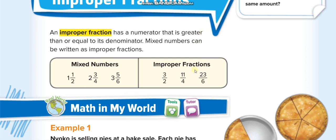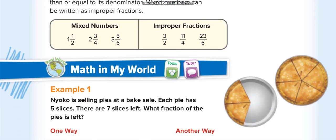In this lesson we will convert from mixed numbers to improper fractions and vice versa. To convert a mixed number to an improper fraction, multiply the whole number by the denominator, then add the numerator. For example: 1 and 1/2 → 1×2=2, 2+1=3, giving 3/2. Next: 2 and 3/4 → 2×4=8, 8+3=11, giving 11/4. And: 3 and 5/6 → 3×6=18, 18+5=23, giving 23/6. The denominator always stays the same.